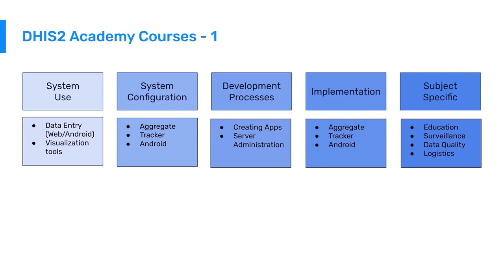For system use courses, we focus on utilizing DHIS2, mainly reviewing data collection and visualization features in both web-based and mobile devices. For system configuration, we focus on making configuration changes across aggregate, tracker, and Android-based systems. In the development processes category, we have courses on creating custom applications for both Android and web, as well as various aspects of server administration. The implementation category focuses on project planning, implementation considerations, and systems evaluations.